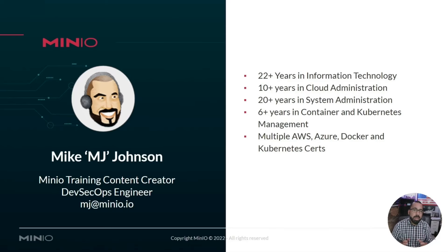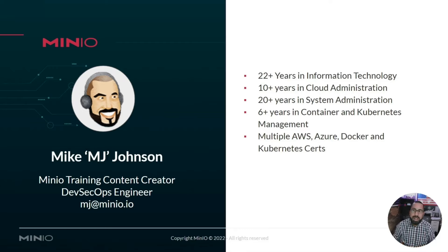First off, a little bit about me. My name is Mike Johnson. I'm a MinIO training content creator and DevSecOps engineer. I have over 22 years in IT, 10 years in cloud administration, 20 years in sysadmin, been doing containers and Kubernetes for quite a while now, and I have multiple certifications in AWS, Azure, Docker, and Kubernetes.